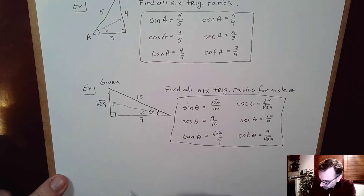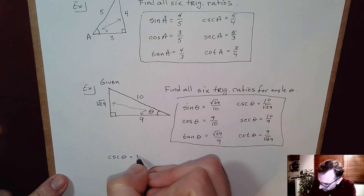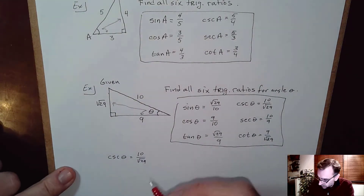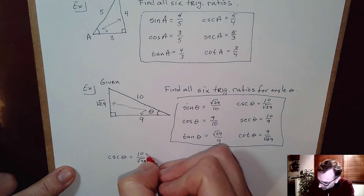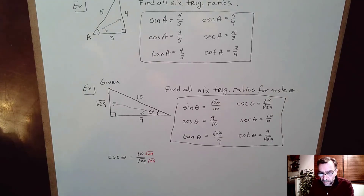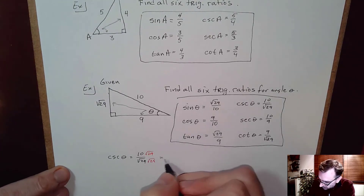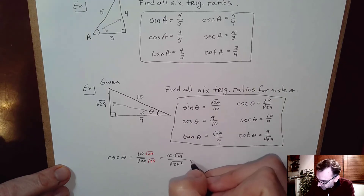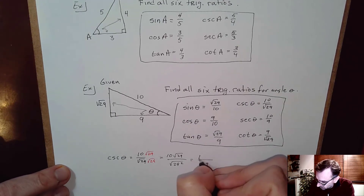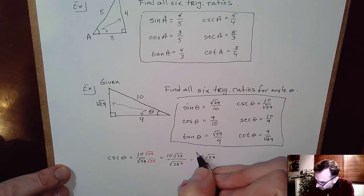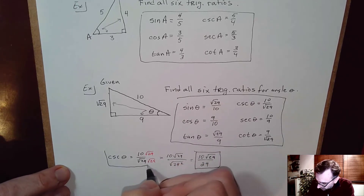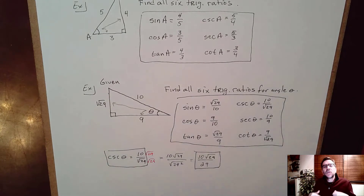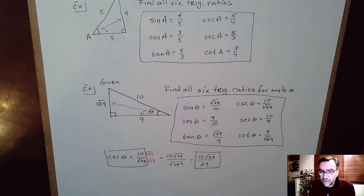To remember how to rationalize, let's look at cosecant of theta, which equals 10 over √29. To rationalize, multiply by √29 over √29. You get 10√29 over 29, since √29 squared is 29. Rationalizing means rewriting without a radical in the denominator. You don't have to rationalize in this course — you'll get full credit leaving radicals in the denominator.